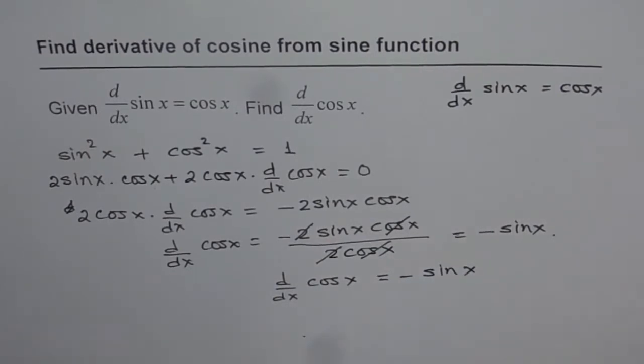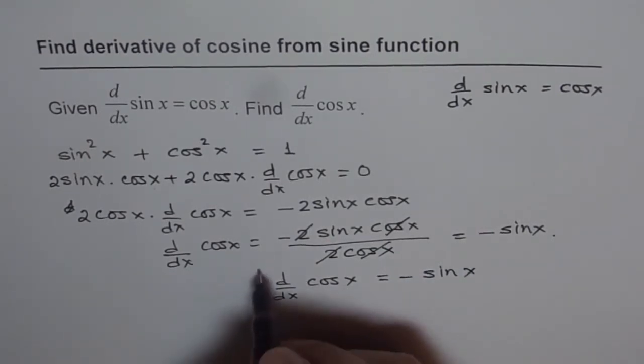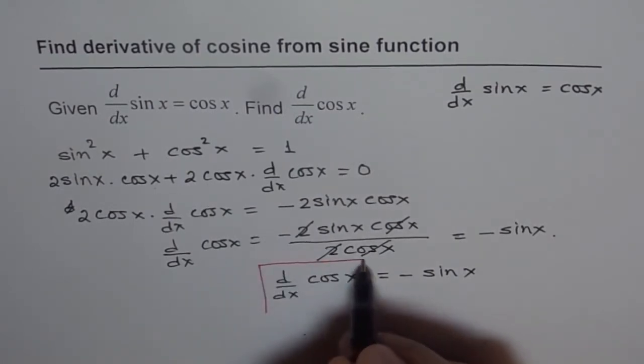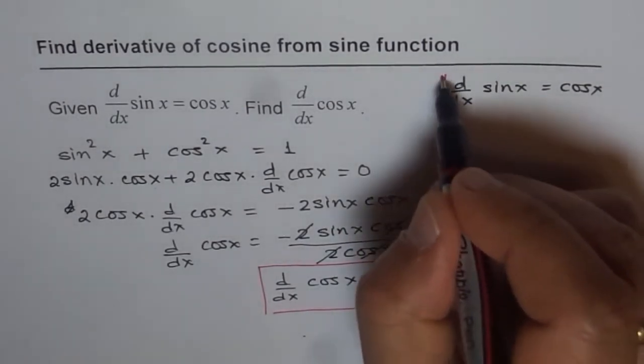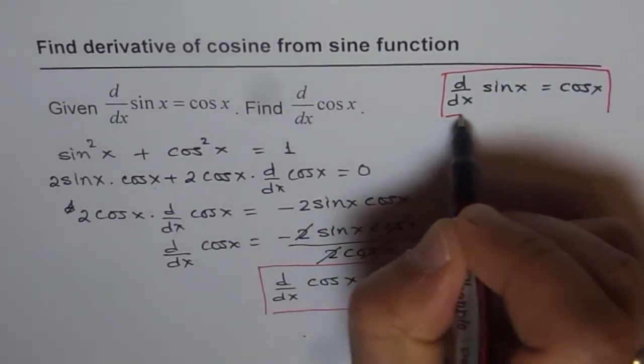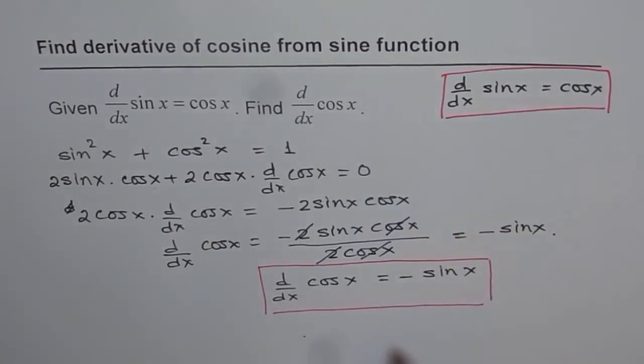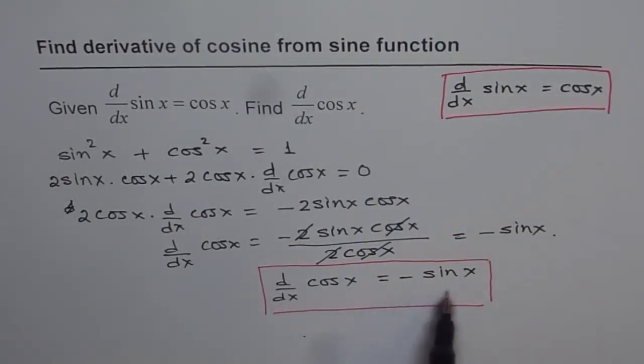So this is the formula which we are going to use all throughout to find or to differentiate trigonometric functions. So we have two basic formulas to start with. One which we found using the first principle: derivative of sin x equals cos x. And now derivative of cos x equals minus sin x.